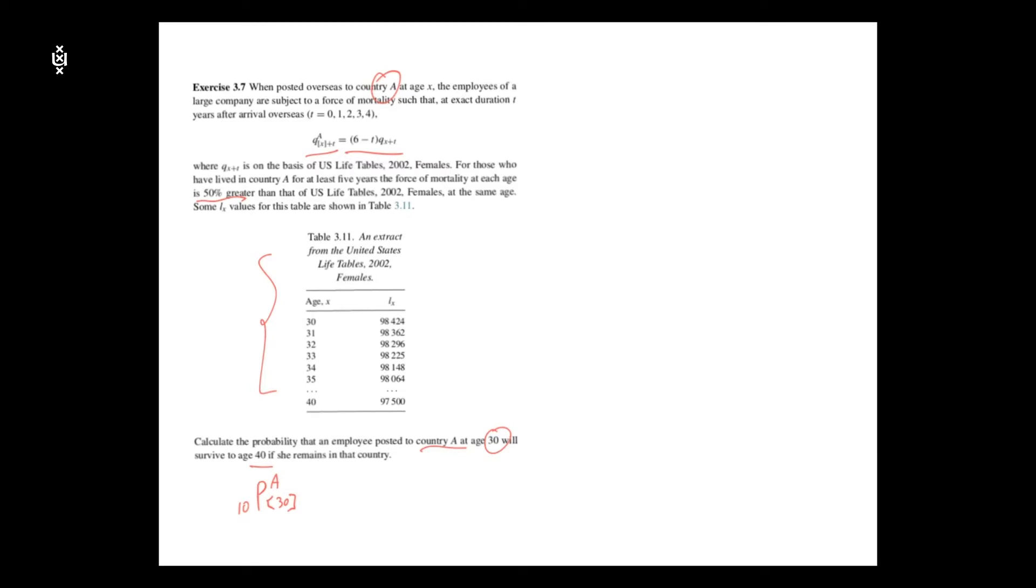Now, since we have different relationship in the first five years and the years afterwards, it is very natural to use the multiplication rule. So we can decompose the probability in 10 years into the probability of first five years, and after five years, this person becomes age 35 and survive another five years.